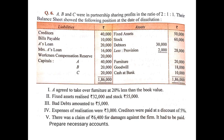Then Mrs. A's loan — A is a partner, but Mrs. A is not the partner. Therefore, any amount of loan taken from a partner's relative is considered an outside liability. So Mrs. A's loan of Rs. 16,000 will be transferred on the credit side of the realization account. We will write: by Mrs. A's loan, Rs. 16,000.